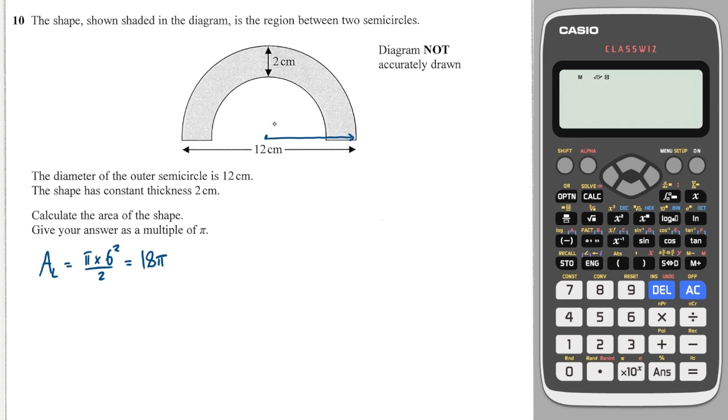And then if we look at the smaller semicircle, that will have a radius of 6 minus 2, which is 4. So the area of the smaller semicircle will be π multiplied by 4² over 2, which will be 16π over 2, which is 8π. So the shaded region is just going to be the larger one minus the smaller one, which will give me 10π. And that is as a multiple of π as they've asked for.